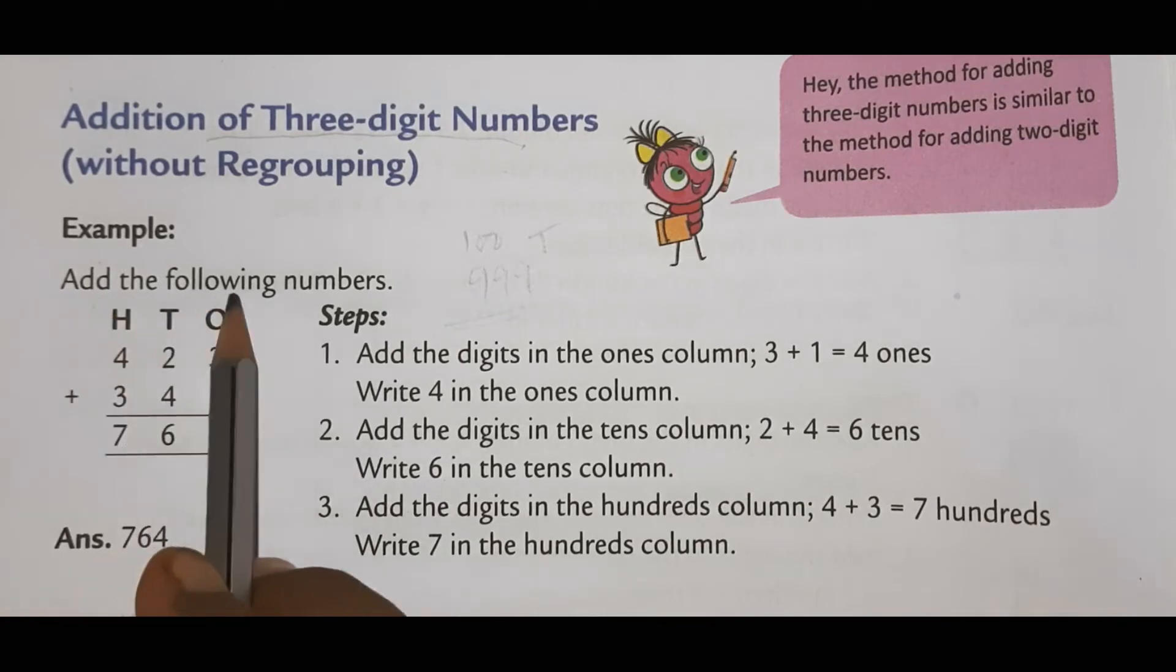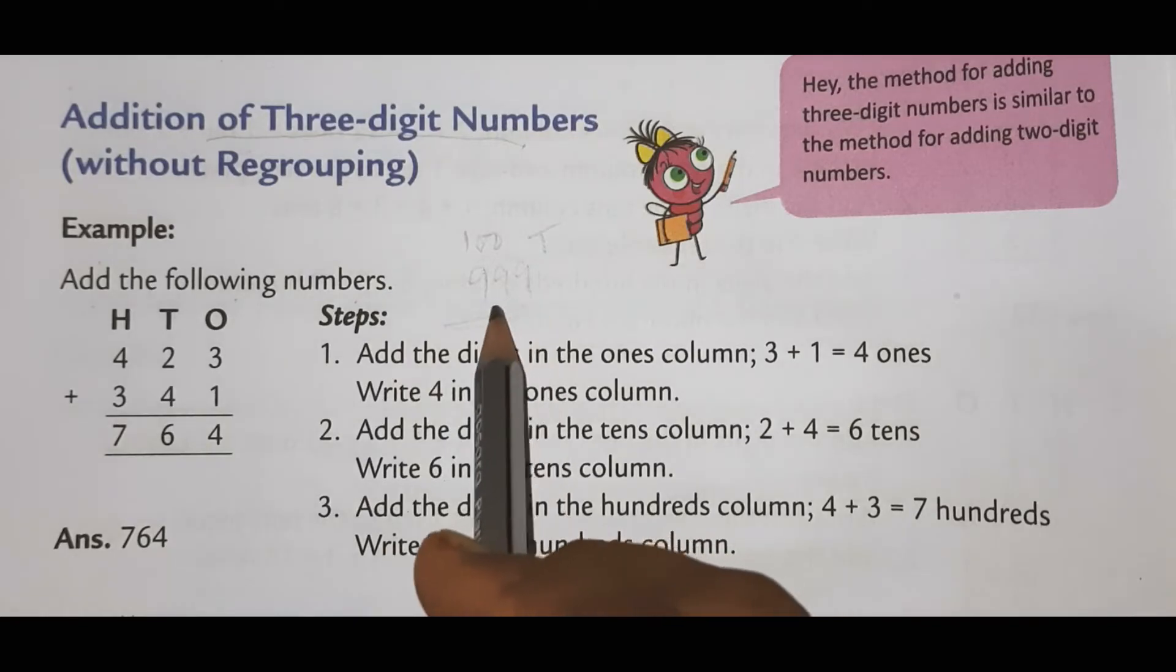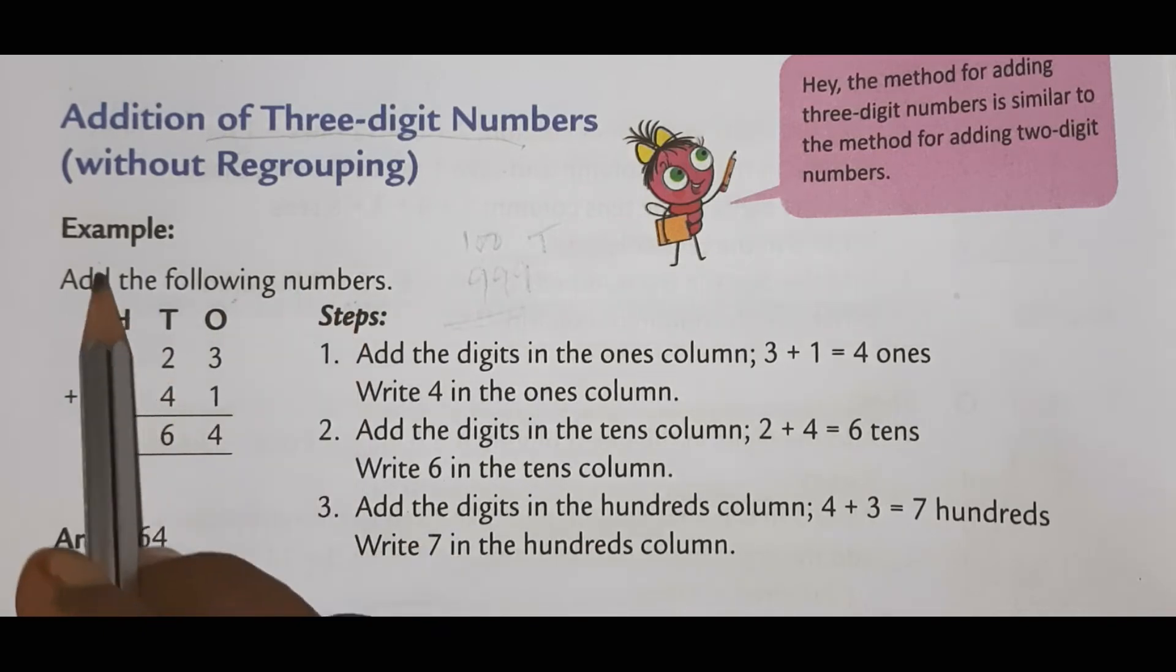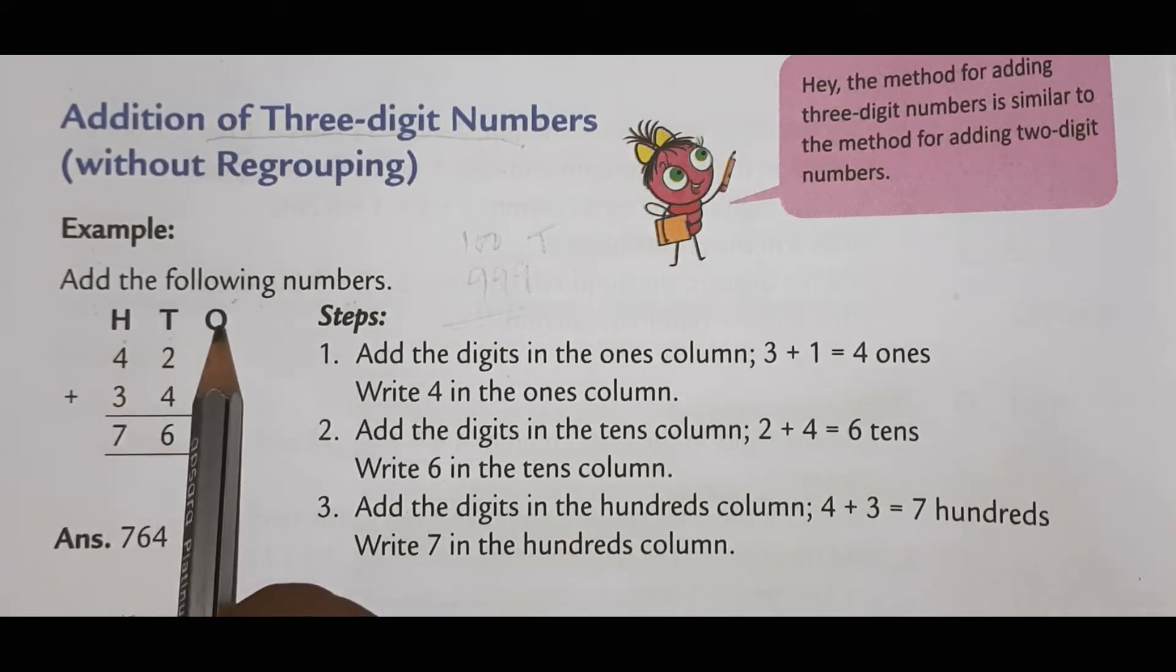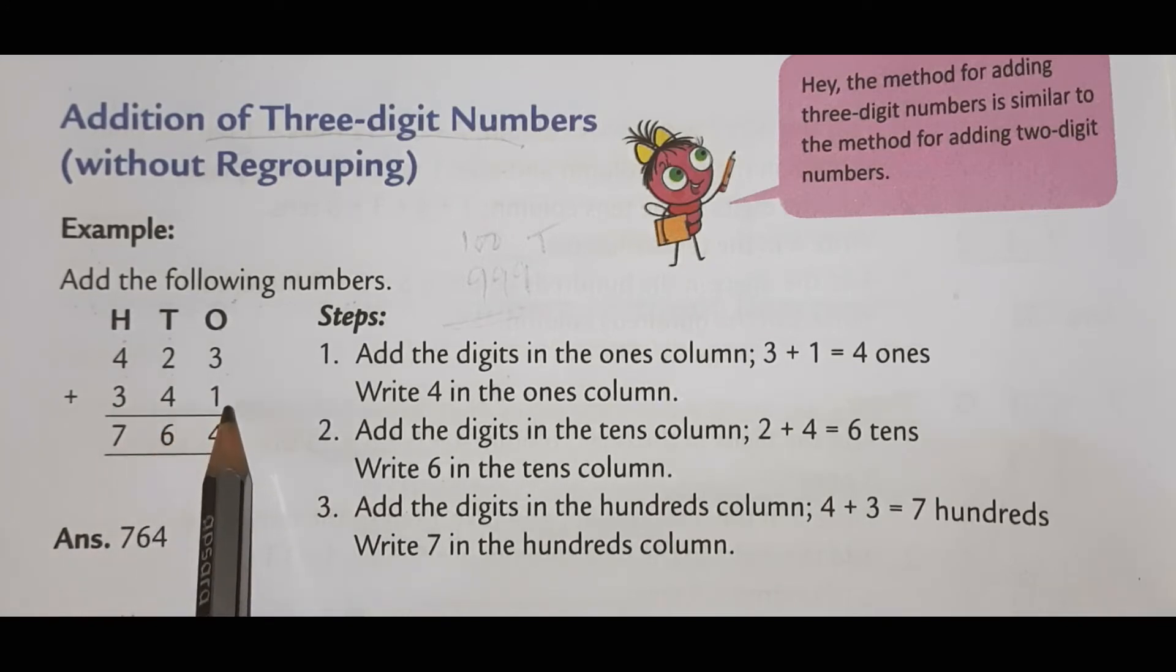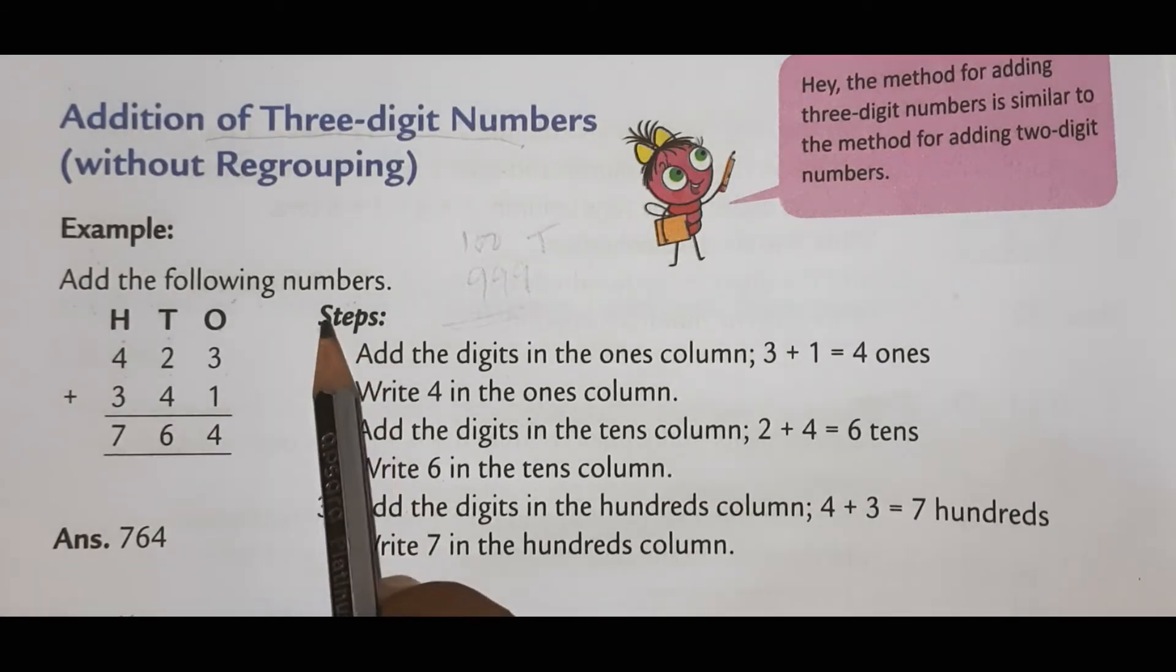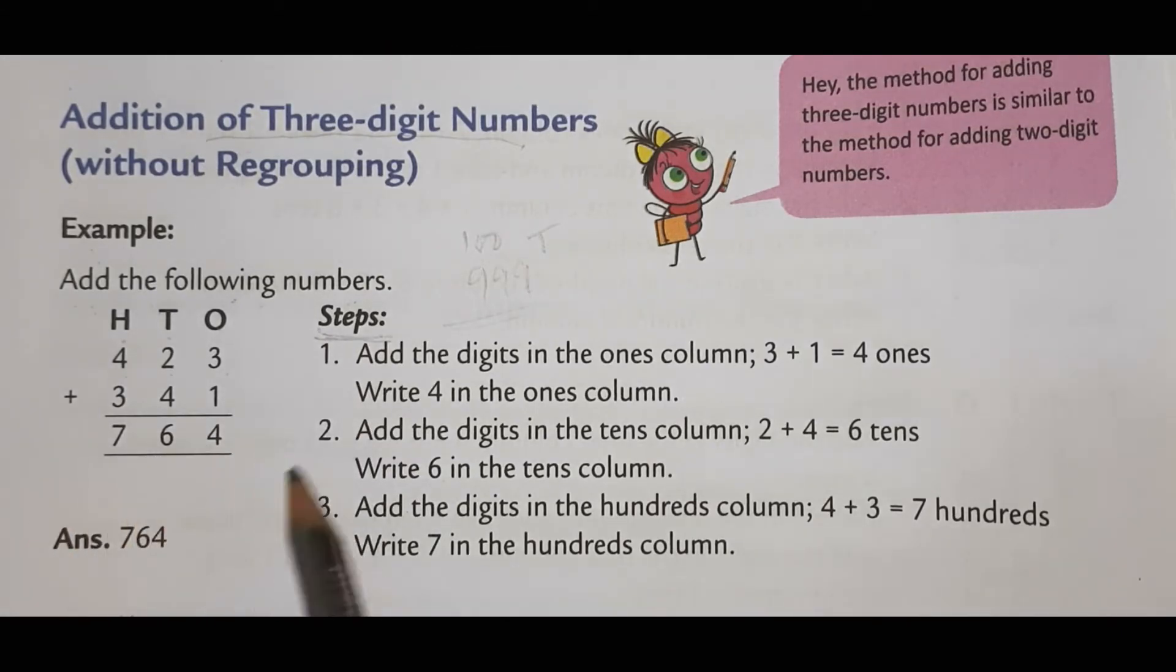Example. Add the following numbers. If you are writing, then erase afterwards. Add the following numbers. For example, 423 plus 341. Now, how do we have to do this? Steps. We have to follow always. We have to follow the steps. How to do the addition. What work we have to do here? We have to do addition. So, we have to follow the steps.